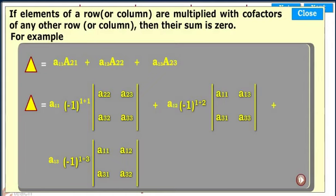Note that if elements of a row or column are multiplied with cofactors of any other row or column, then their sum is zero. For example, if determinant equals a11 capital A21 plus a12 capital A22 plus a13 capital A23.